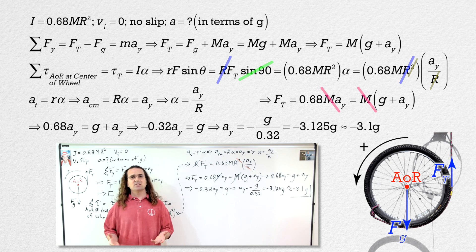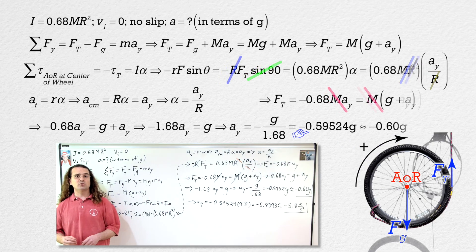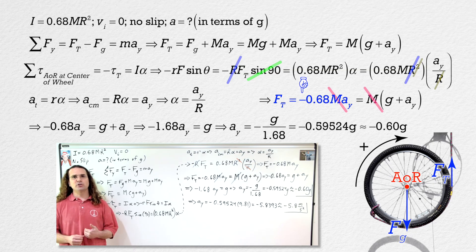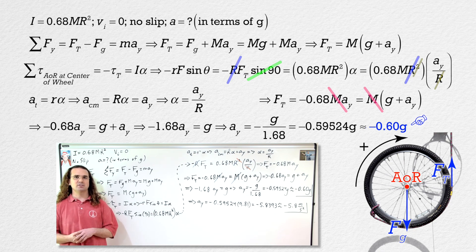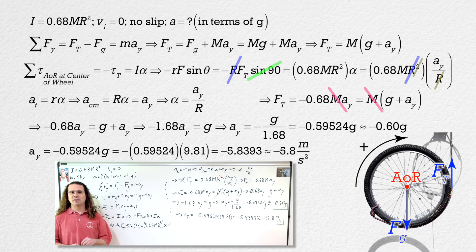Let's reverse the direction of the positive torque. This means the torque caused by the force of tension is negative, which makes the force of tension equal to negative 0.68 times the mass of the wheel times the acceleration in the y direction. Following that through the solution, the acceleration in the y direction equals negative little g divided by 1.68, which works out to be negative 0.60 times the acceleration due to gravity with two significant digits. The acceleration in the y direction is negative because the wheel is accelerating downwards. Here on planet Earth, that works out to be roughly negative 5.8 meters per second squared. Notice the acceleration of the wheel depends only on the acceleration due to gravity and the shape of the wheel — the mass and radius do not affect the wheel's acceleration.